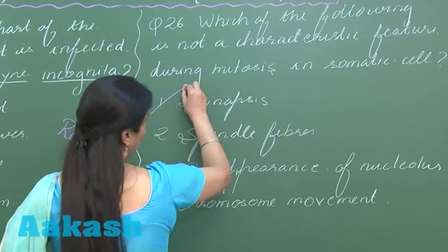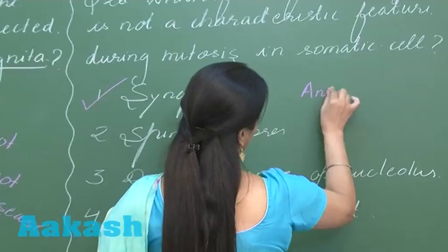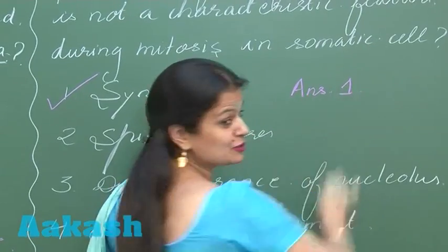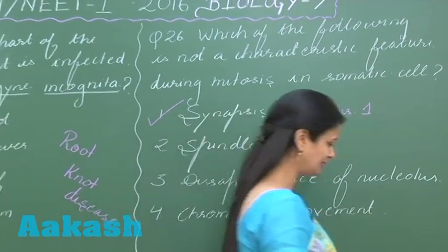So it means the right option for this question is option number 1. So let's move on to question number 27 here.